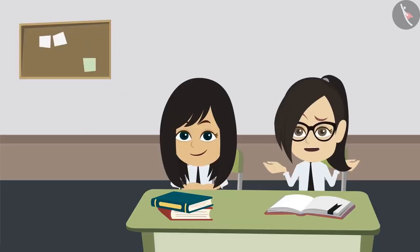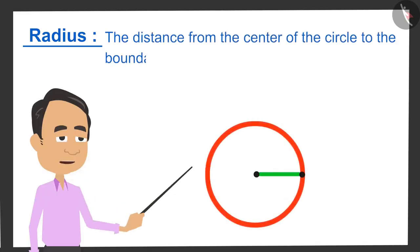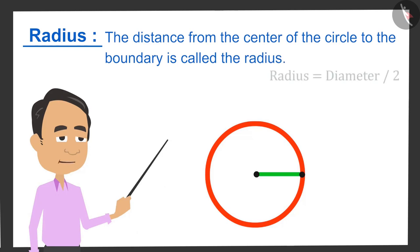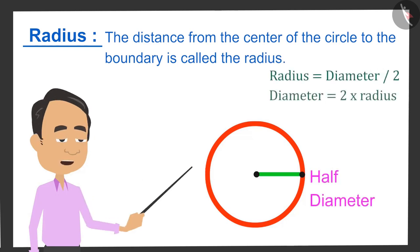Sir, what is a radius? The distance from the center of the circle to the boundary is called radius. It is half of the diameter, so it can also be called half diameter.